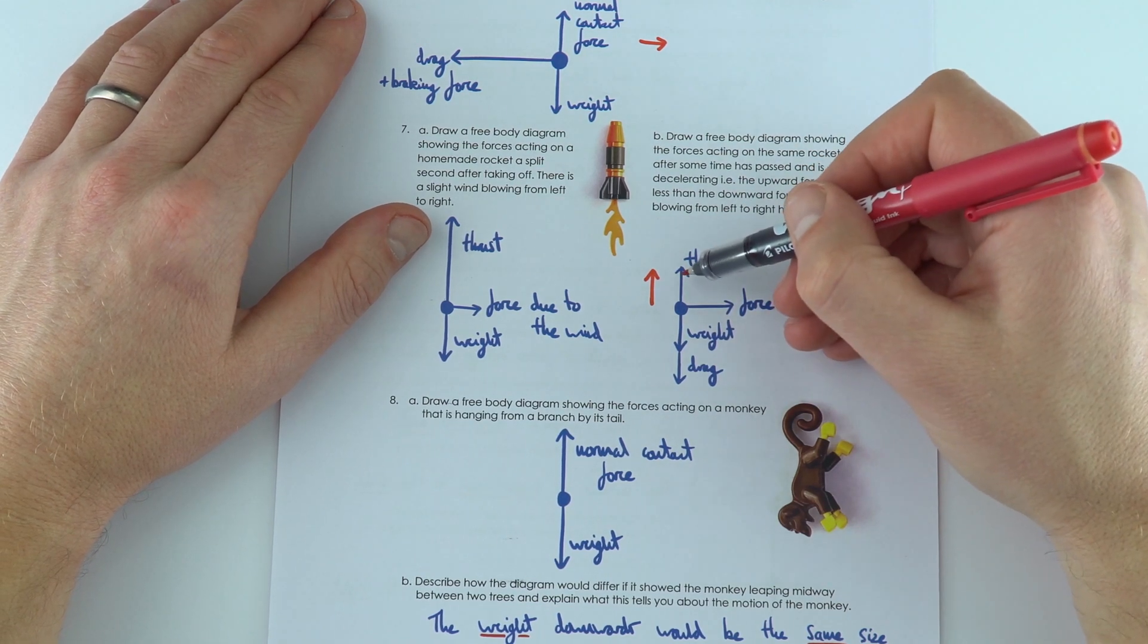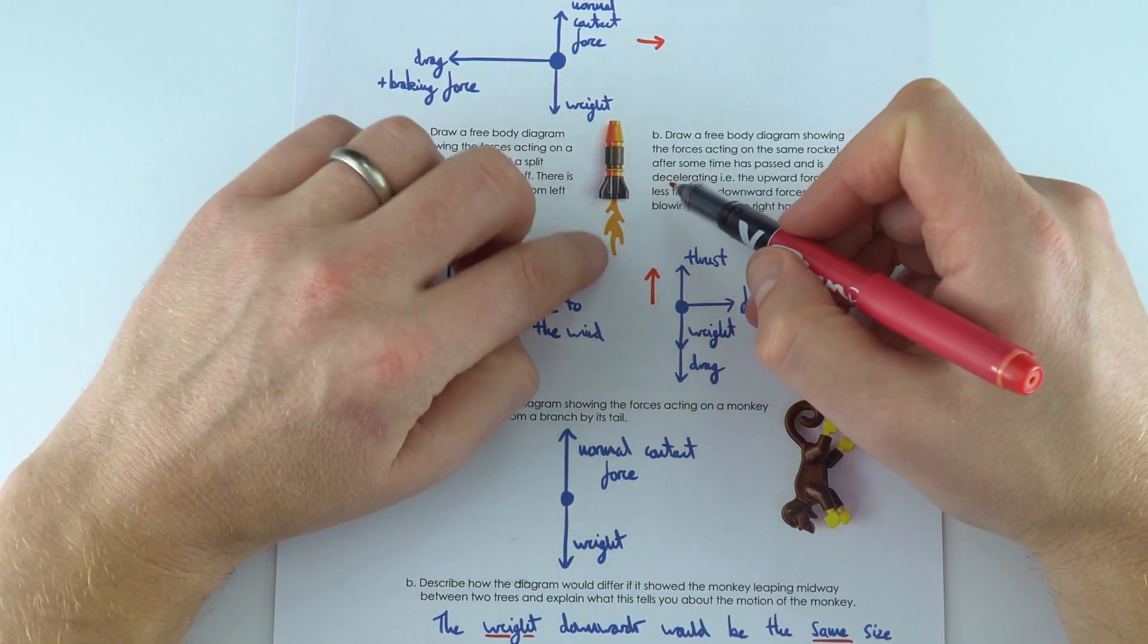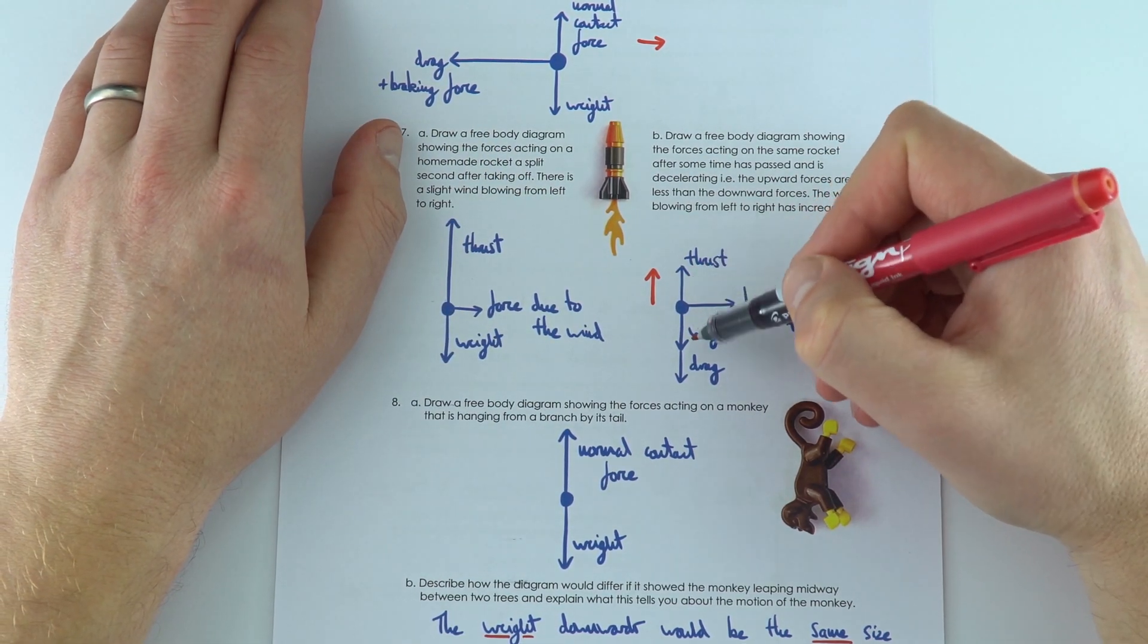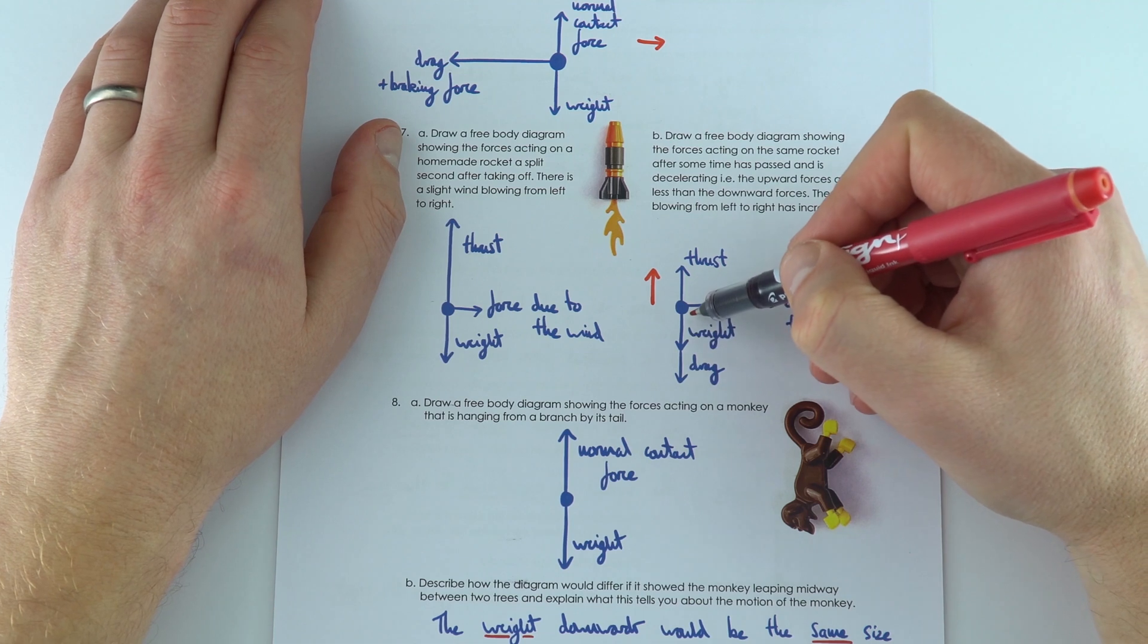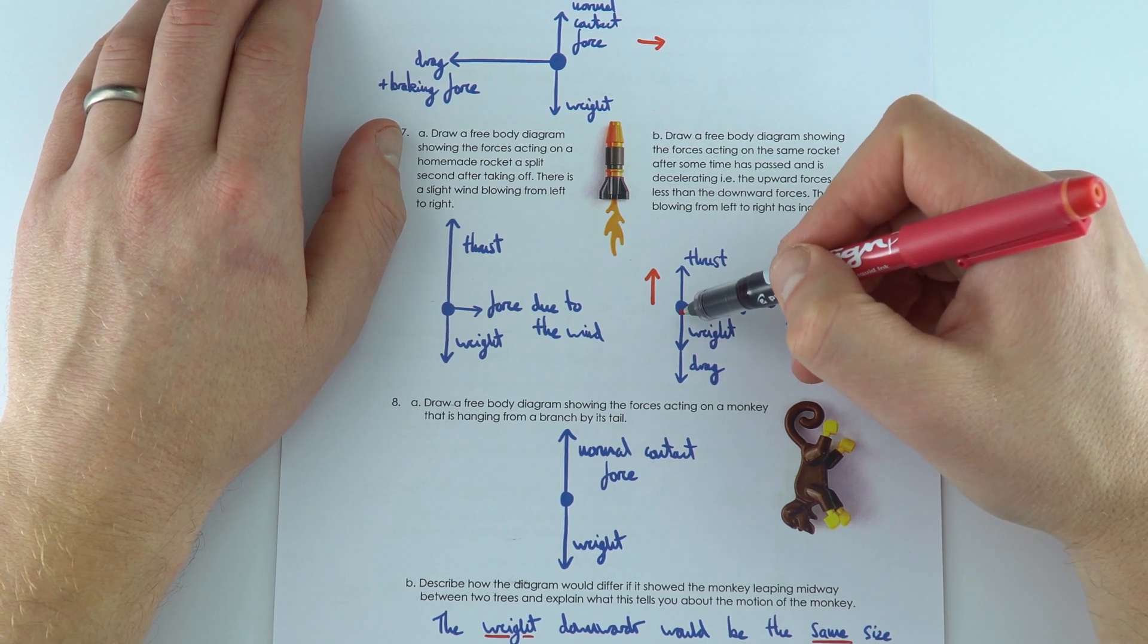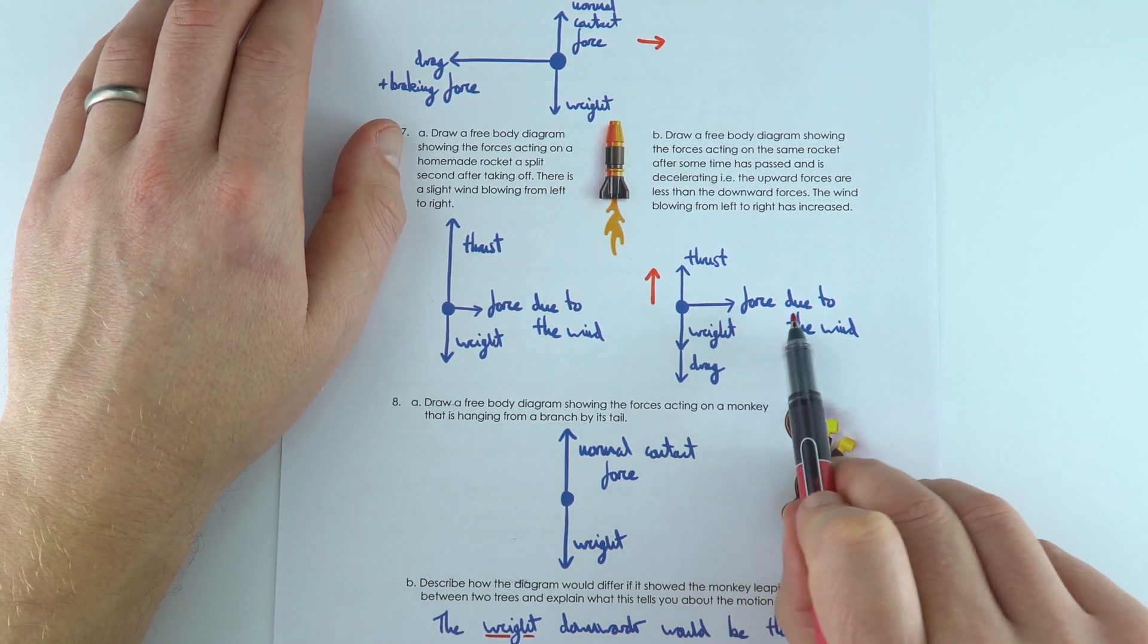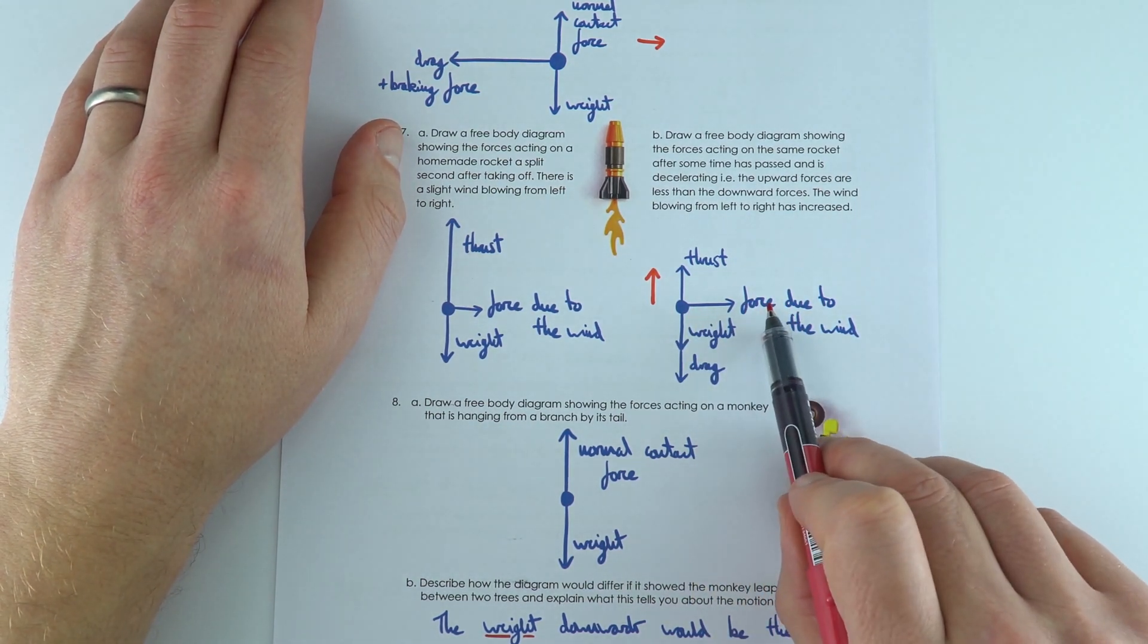There might still be some thrust, there might still be the rocket firing pushing it forward, but now the size of the thrust is smaller than the combined size of the weight and the drag. That means there's going to be a resultant force down, so it's decelerating. And now we've also got a bigger arrow to the right because the force due to the wind is even bigger.